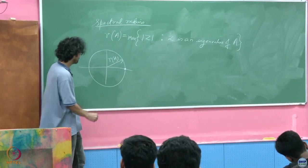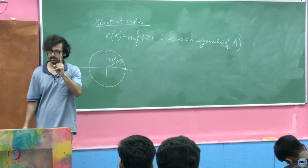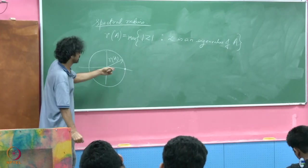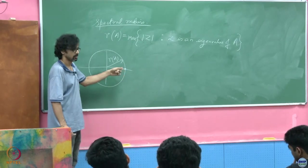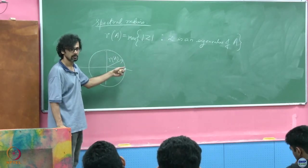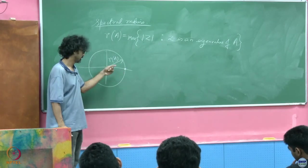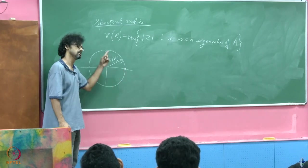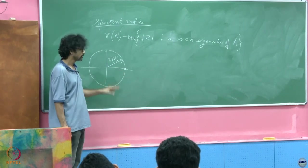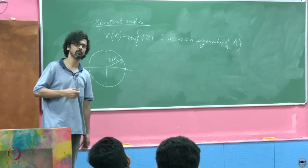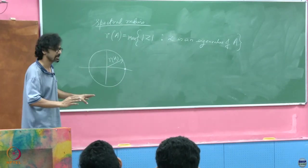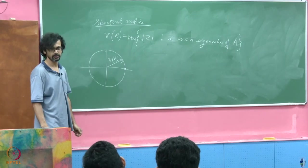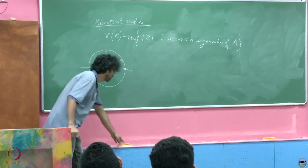Even more interesting is the fact that this eigenvalue has algebraic multiplicity exactly equal to 1 — it cannot even be repeated. So for a positive matrix, there is a unique largest real eigenvalue. The spectral radius is also an eigenvalue; it is real and non-repeating, with geometric multiplicity equal to algebraic multiplicity equal to 1.